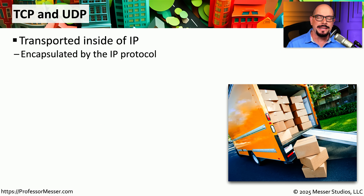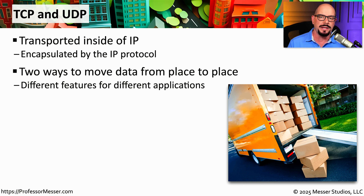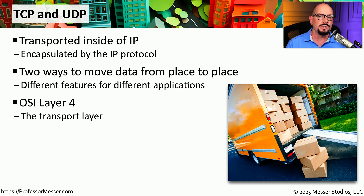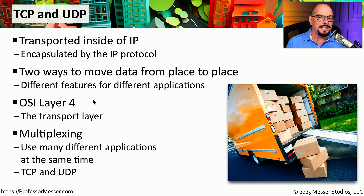The internet protocol, or IP, is one of the most popular protocols. Within IP, we commonly find TCP and UDP. TCP and UDP are very similar protocols used to transport information, but there are some interesting characteristics unique to each. Network professionals often refer to TCP or UDP as an OSI Layer 4 protocol. TCP and UDP allow us to communicate across multiple devices simultaneously, sending very different types of information — we refer to this as multiplexing.